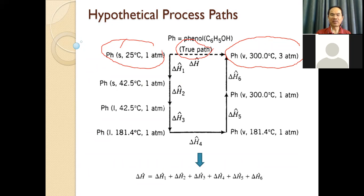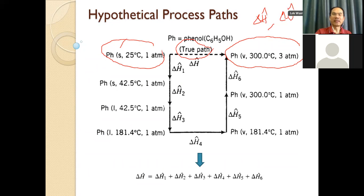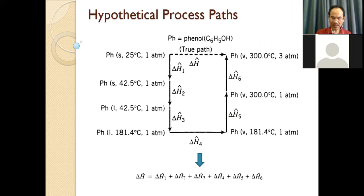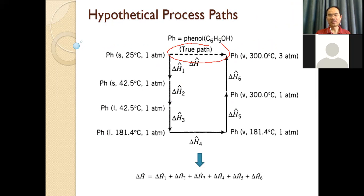For this case, we can change the path because delta S and delta U are state functions — they depend only on the initial and final state, not on the path. So we can calculate using any path and the entropy will be the same. But for this case, we cannot calculate the direct path from solid to vapor — we have no data, no technique to cover it directly. So we change the path.